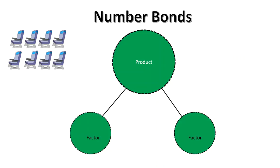Closely examine this array of train seats. There are two rows of train seats, so I have two as my first factor. There are four columns of train seats, so four is my second factor. There are eight train seats altogether.